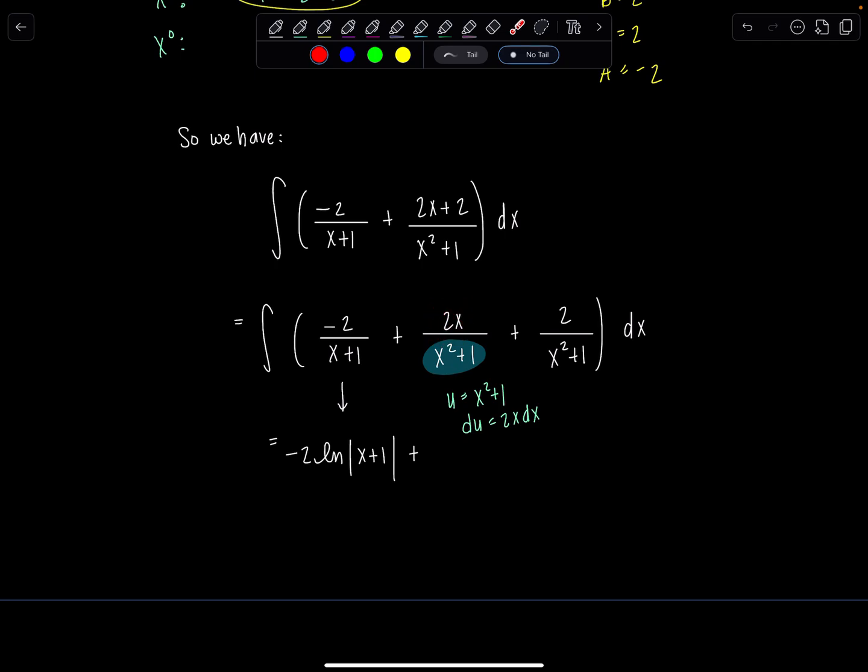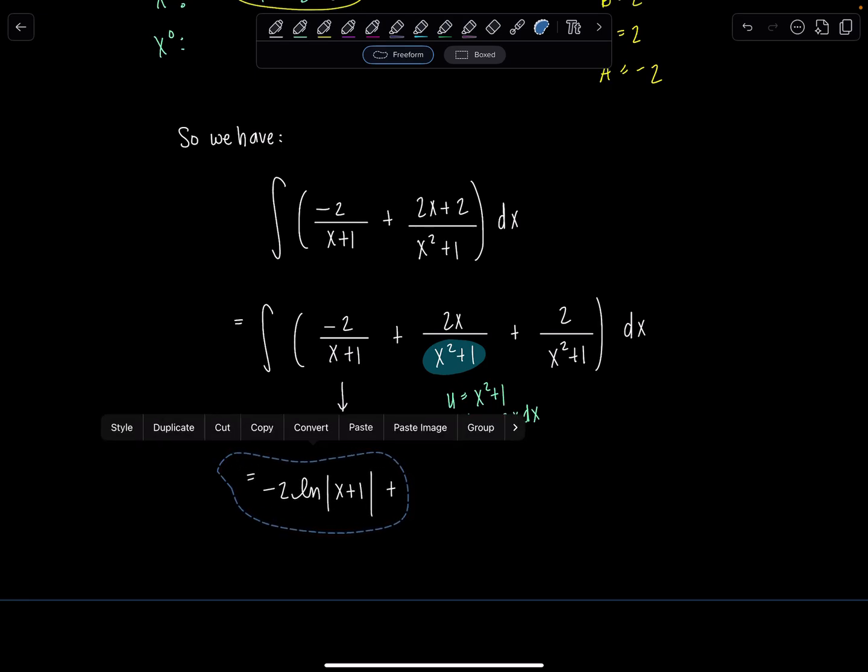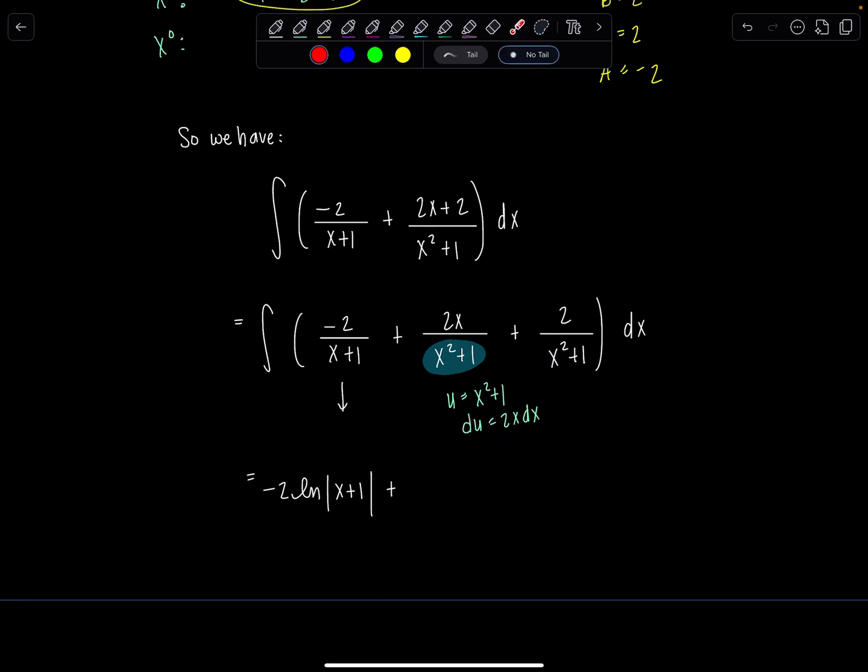So I don't really need to write out all the steps of the u sub. I know if I were to do it, I would have 1 over u du, right? Because the u would be in the denominator. So the anti-derivative is just going to be natural log absolute value of u. But x squared plus 1 is never negative. So I can just leave those as parentheses instead of absolute value.